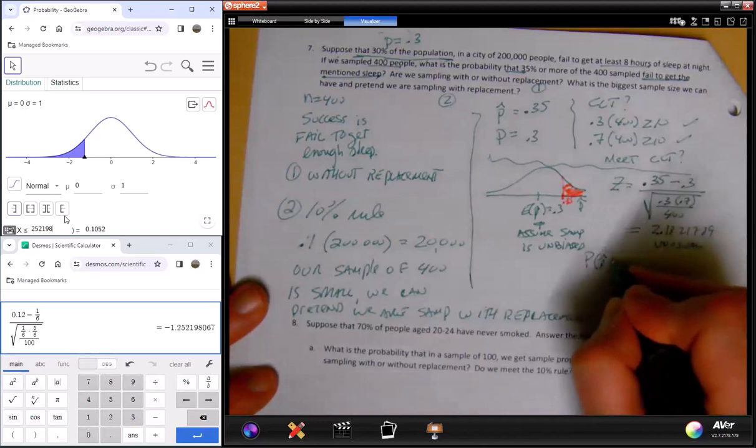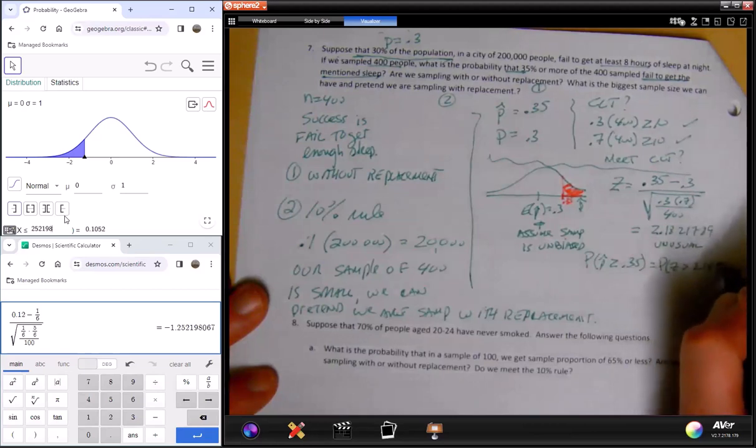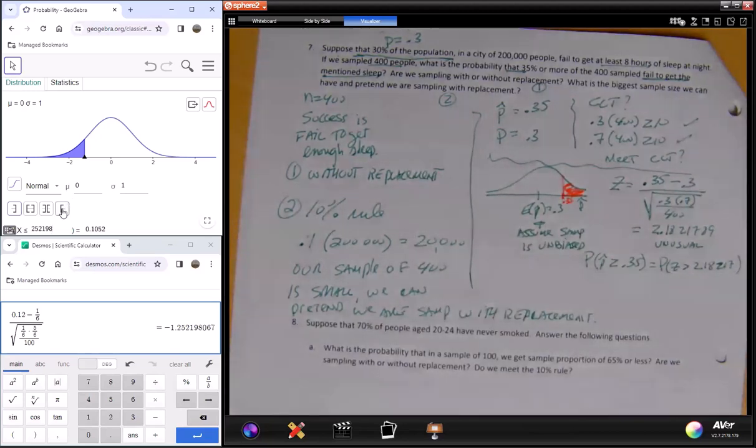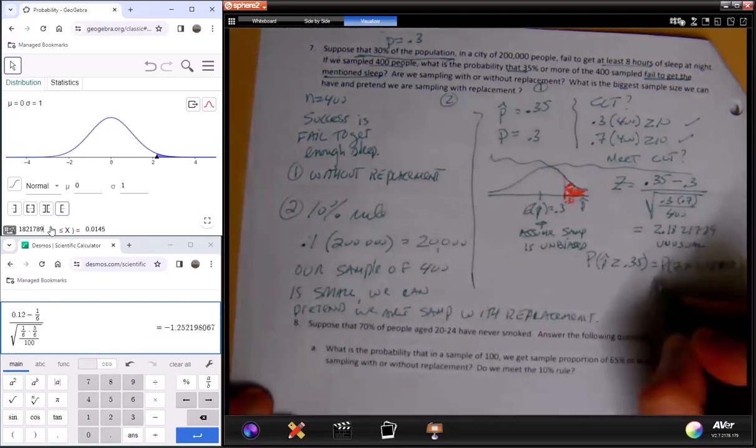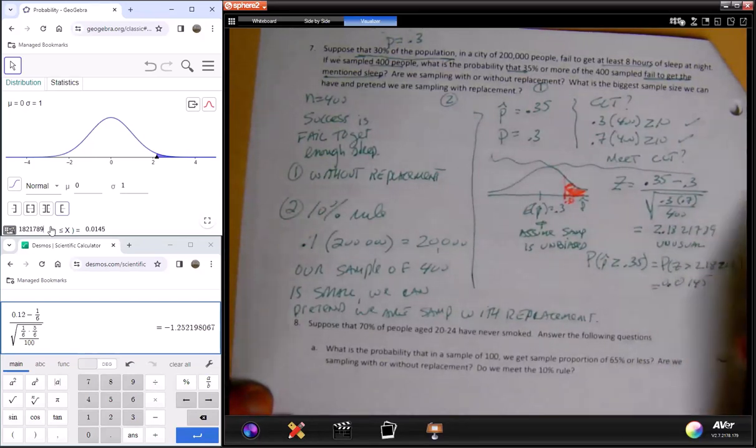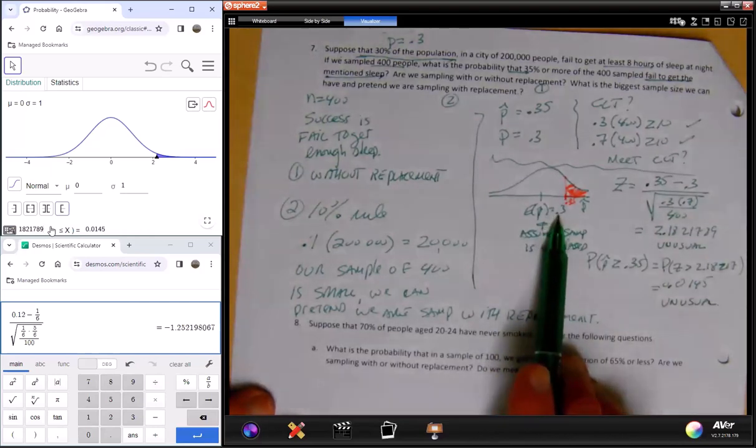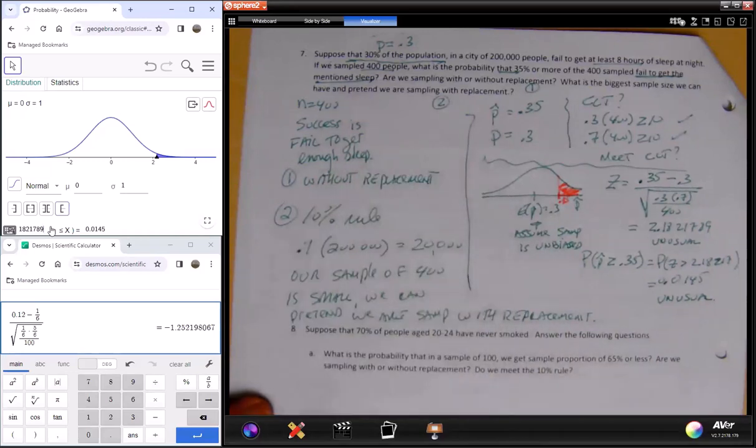Now I'm going to write this formally - the probability of p-hat being greater than or equal to 0.35, this turns into this z-score you see above. But now I come up here into my normal distribution. I click to the right because that's the direction I'm heading in. And I'm going to enter this z-score, 2.1821789. And I get 0.0145. Yeah, this will happen about a little more than 1.5% of the time. Yes, this is unusual. So the chance, if the true population proportion is 30%, the chance of you in a sample of 400 getting a sample proportion of 35% or more is very unusual. You're most likely not going to see that.